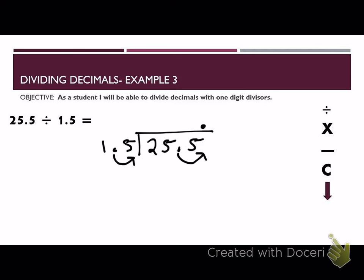We have 15. Does 15 go into 2? Well, no, it does not, so we're going to go ahead and put a 0. Does 15 go into 25? Yes, it does, one time. 1 times 15 is 15. We subtract, and we will get 10.